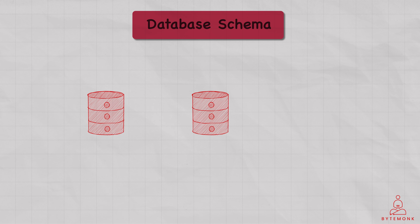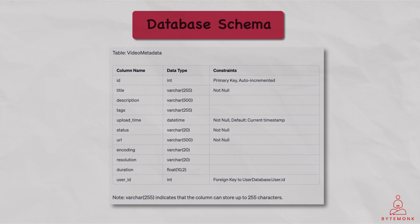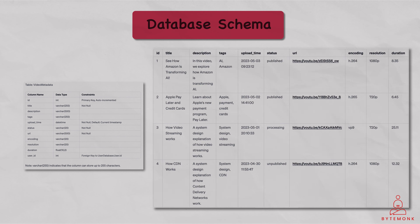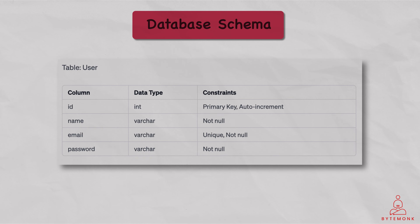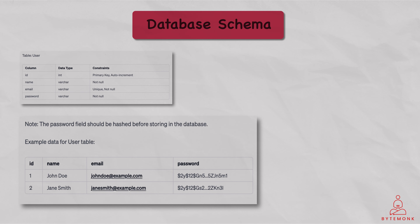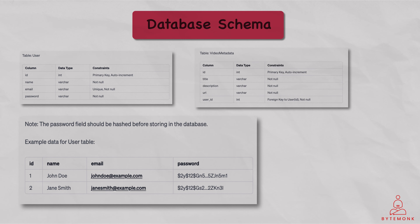For our database schema, let's go with three databases. The video metadata database will have a table with columns such as ID, title, description, tags, upload time, status, URL, encoding, and so on. We'll also have a user database with a table containing columns such as ID, name, email, and password, and it will also have a relationship where one user can have many videos, as indicated by the foreign key in the video metadata table.